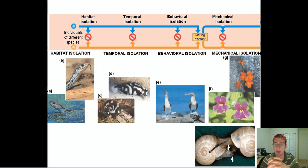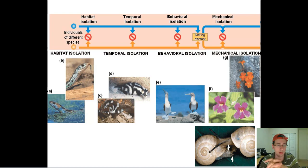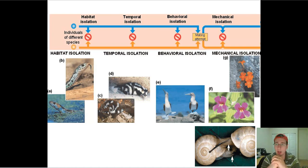Another kind of isolation is what we call behavioral isolation, and that's going to be isolation in the way that they act. Sometimes the courtship display that one animal would do to impress the other sexually will not be the same, and that will cause isolation from one population to the other because they will not understand each other, will not be impressed by each other, and therefore will never actually engage in sexual behavior.